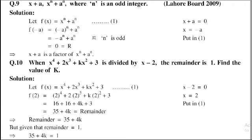Since x minus 2 equal to 0 implies that x is equal to 2, put in equation 1. So f of 2 equal to 2 power 4 plus 2 into 2 power 3 plus k into 2 power 2 plus 3.